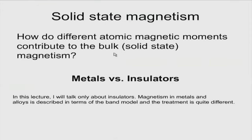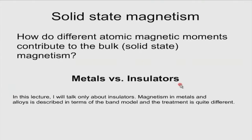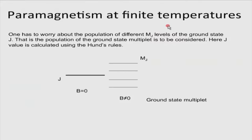Here we have to distinguish between metals and insulators. In this lecture, I will only talk about insulators. In the case of metals, you have bands and a free electron picture, so the magnetic response is somewhat different. Let us proceed with what happens in the case of magnetism of an insulating material like ferrite, for example. So from now onwards, solid means insulating solid — most oxides are actually insulating solids.